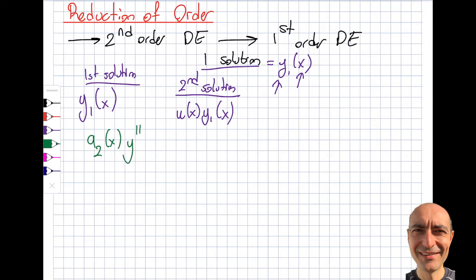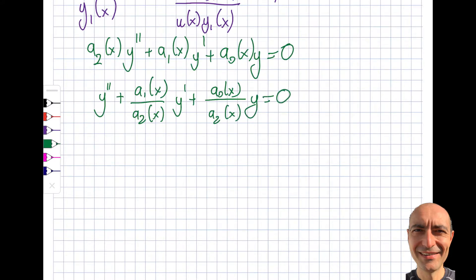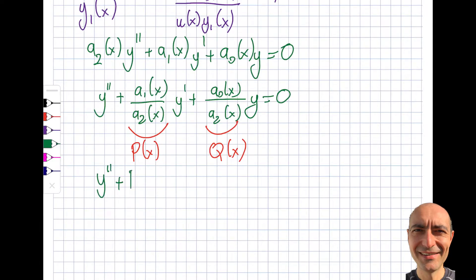Let's work with a homogeneous linear second order differential equation set equal to zero. I'll divide everything by a2(x), giving a1(x)/a2(x)·y' plus a0(x)/a2(x)·y = 0. I'll call a1/a2 = P(x) and a0/a2 = Q(x), so the equation becomes y'' + P(x)·y' + Q(x)·y = 0.